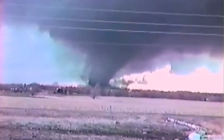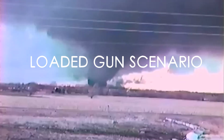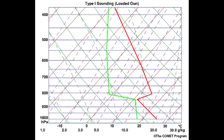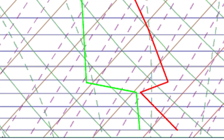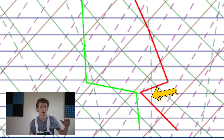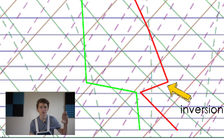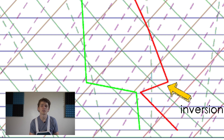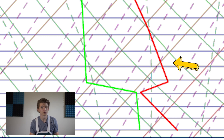This is what meteorologists call the loaded gun scenario. It's a situation in which you have temperatures that decrease with height near the surface, but then at about a thousand feet up there exists an inversion — a small section of the atmosphere where the temperatures increase with height. And then above this layer, temperatures dramatically decrease with height as they normally would.